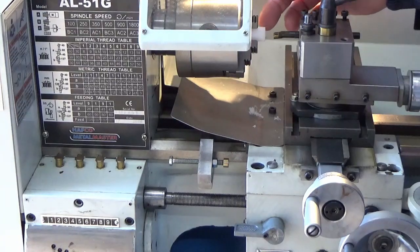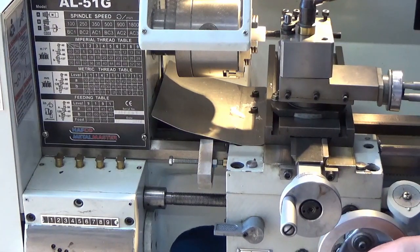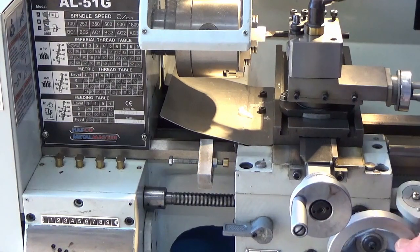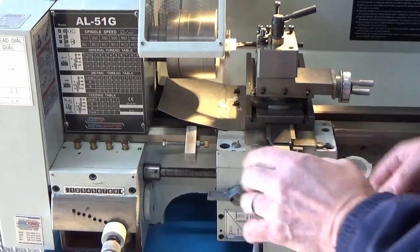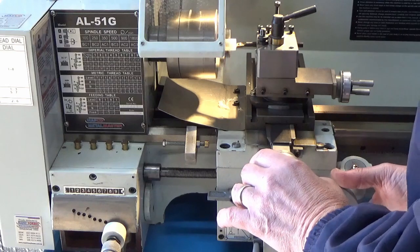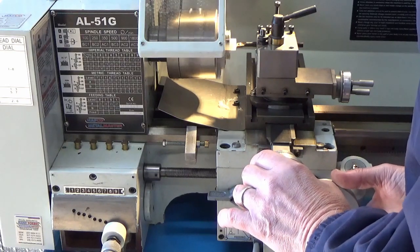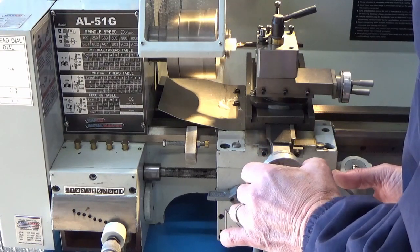So what we've done here is that we've brought the boring bar in as far as it can go and then we've set up our stop, so we just stop at that point. So we don't have to worry about going too far. Our graduations on here are 0.05mm, approximately 2000th of an inch. We're going to go in 5 divisions.